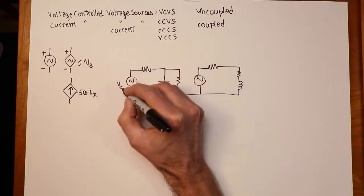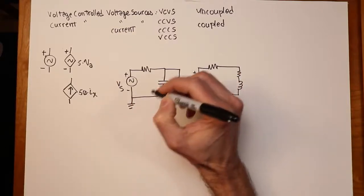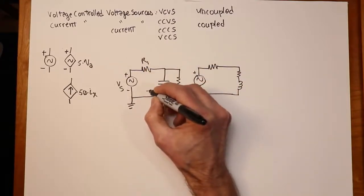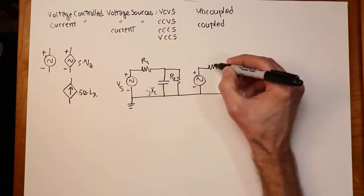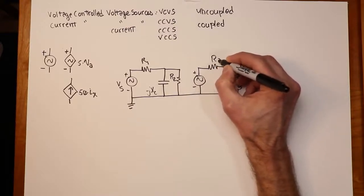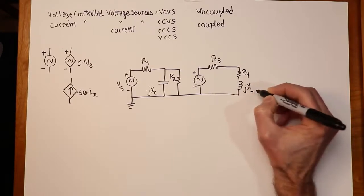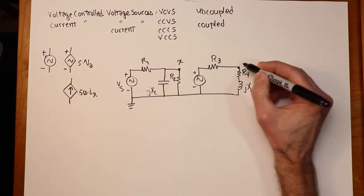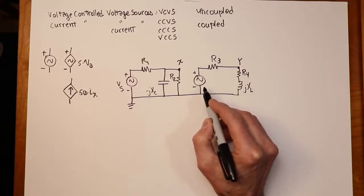And I'll just run some values in here, or symbols anyway. We'll call this R1. This is minus JXC. R2. Call this R3. Pretty inventive. R4 and JXL. And I'll label a couple of points. We'll say this is point X, node X, and we'll say that's node Y. So this source right here is going to be our dependent source.